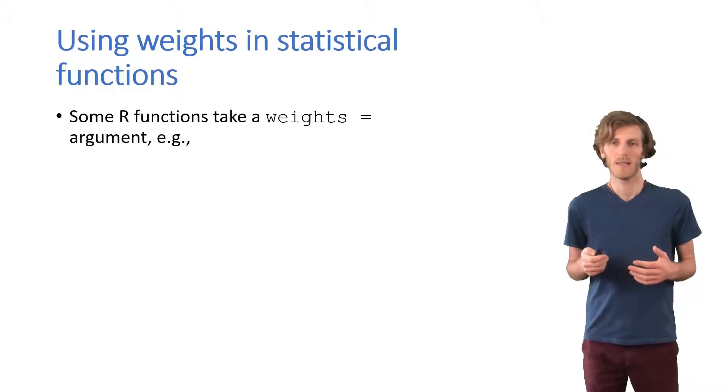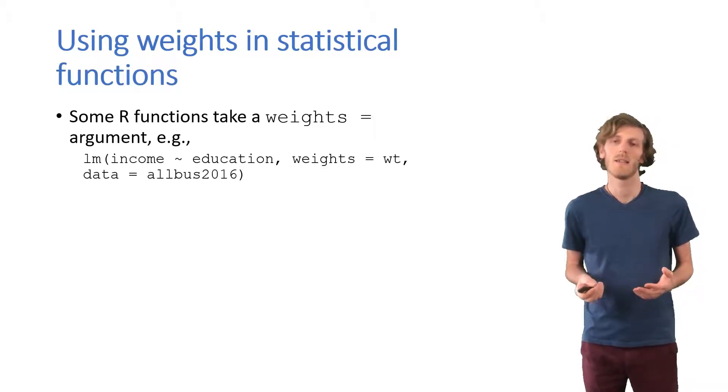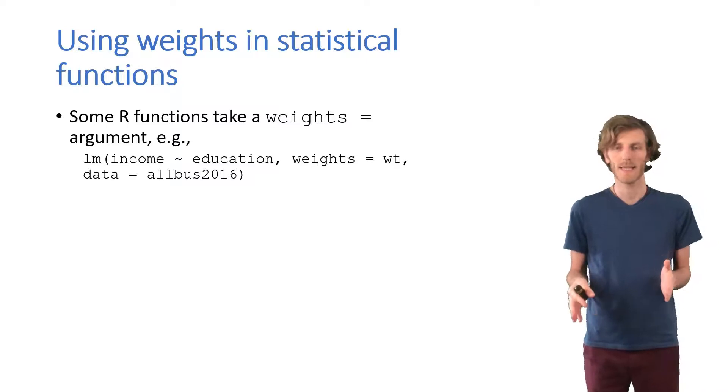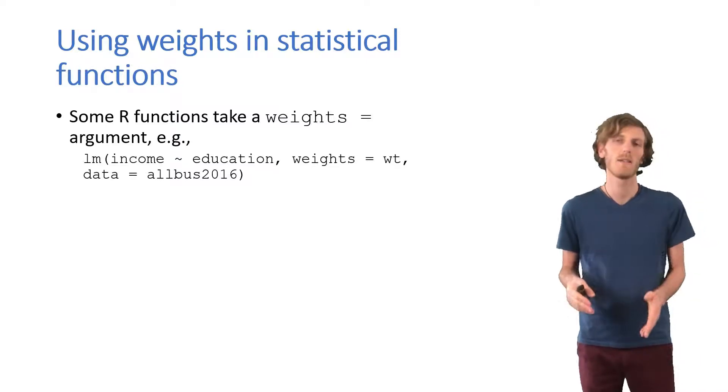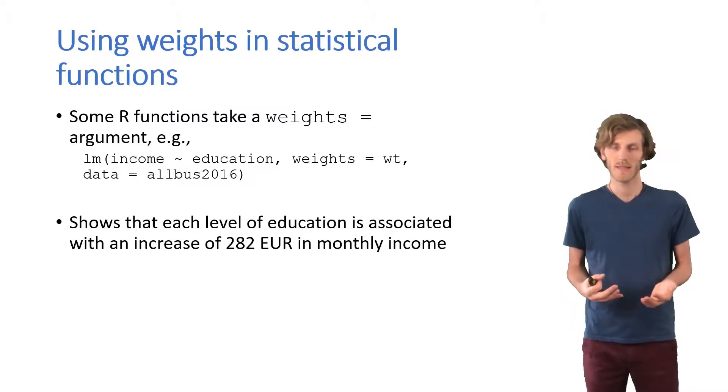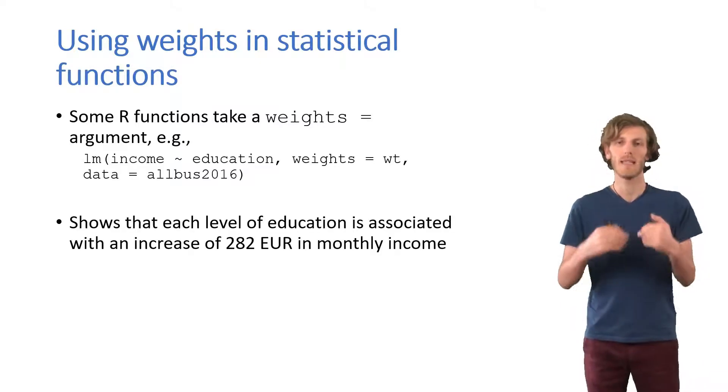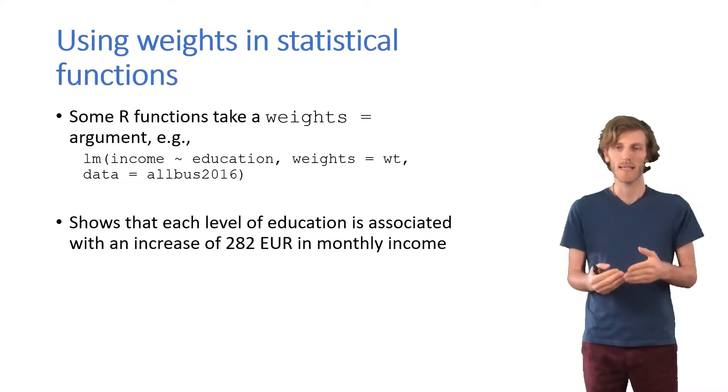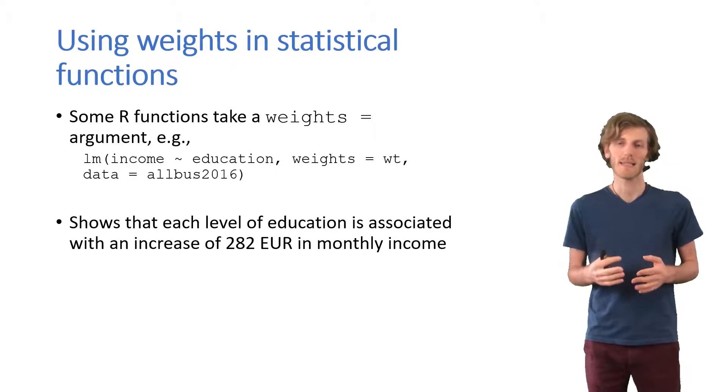So, the LM function that we use to run a linear regression accepts that as an argument. So here, we have the standard code to run a regression of income as predicted by education. We provided the data, we provided the weights. And we get a coefficient that indicates that for each level of education completed, the estimated monthly income increases by 282 euros.